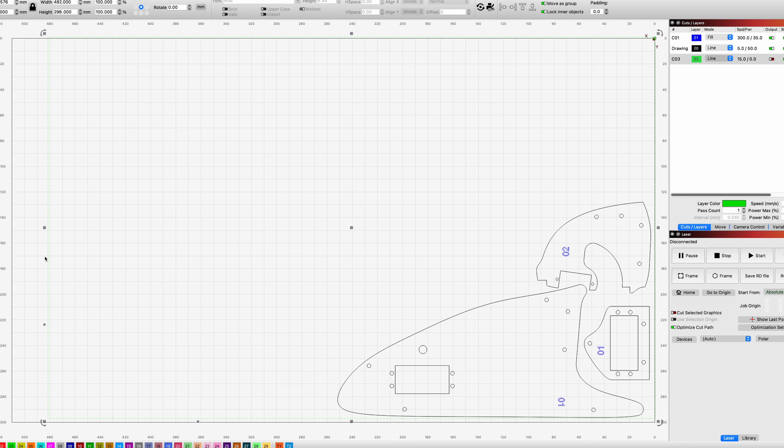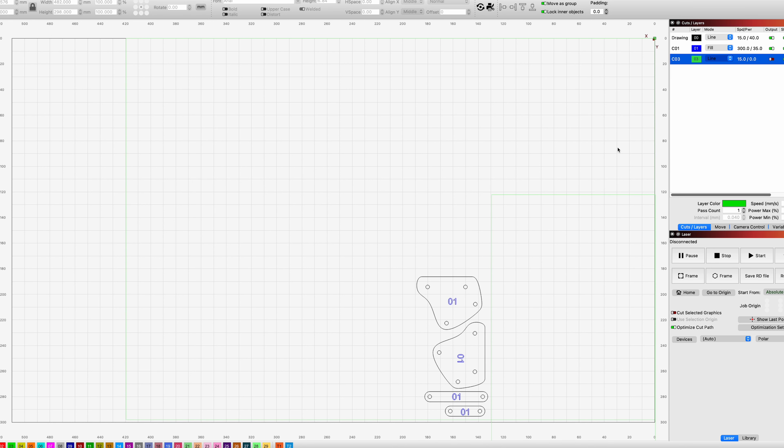I also put this green box around in Lightburn to show me the exact size of the acrylic sheet I have so that I don't go past it. And I got the output turned off on that layer so that it's just a reference for my layout purposes.